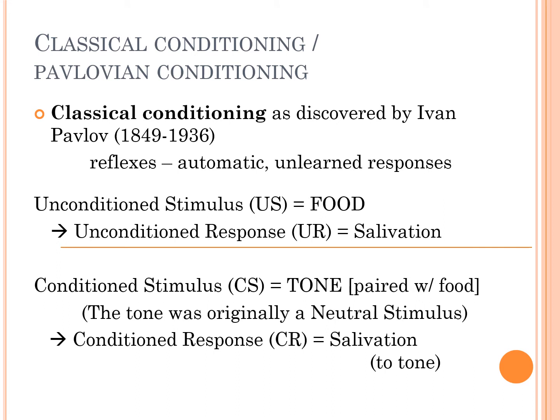Learning and memory is really quite complicated, so we have to describe what we mean by learning and what we mean by memory. I'm going to start with a classical way of talking about learning called classical conditioning, as discovered by Ivan Pavlov in the early 1900s. I'm sure many of you have been introduced to classical conditioning and operant conditioning, and I'm going to cover what's necessary, but if you're confused you might look it up a bit.